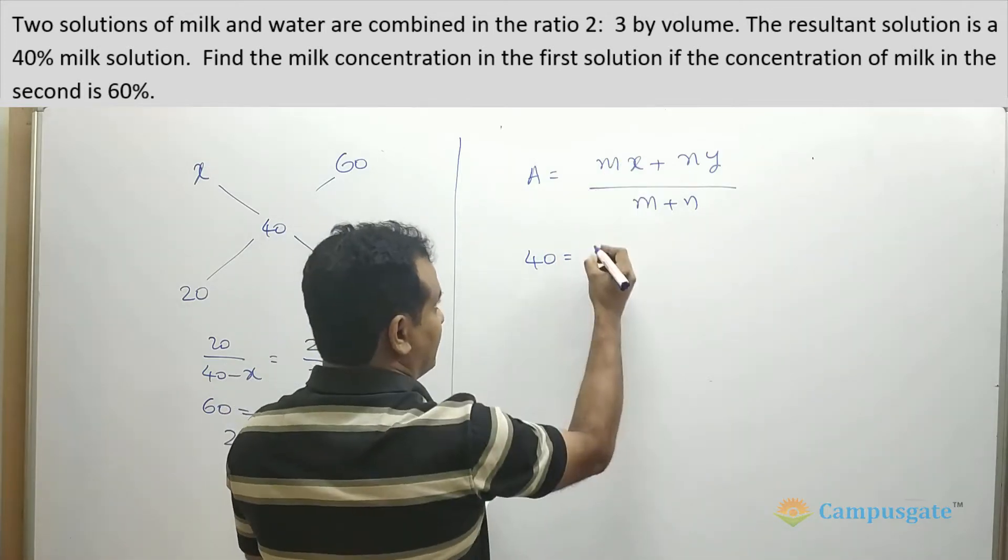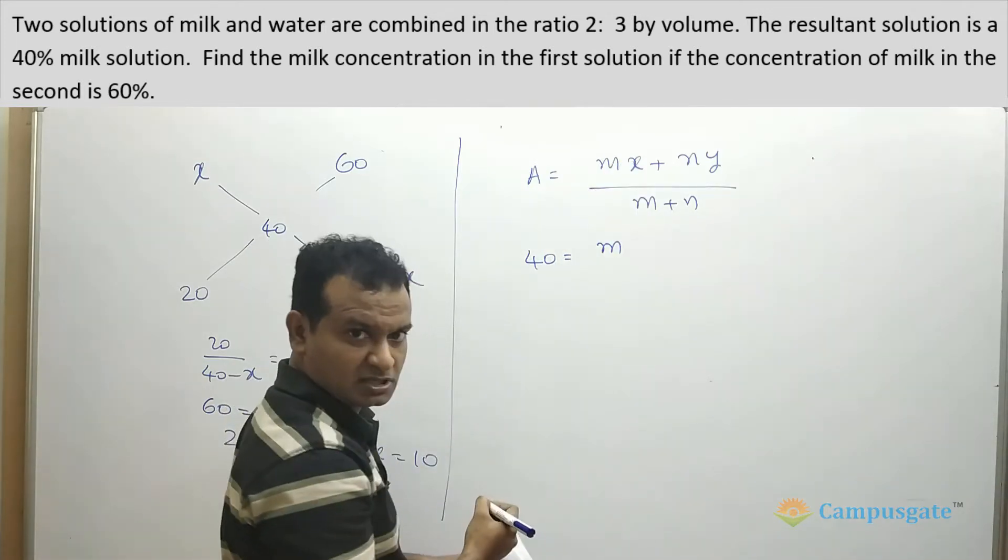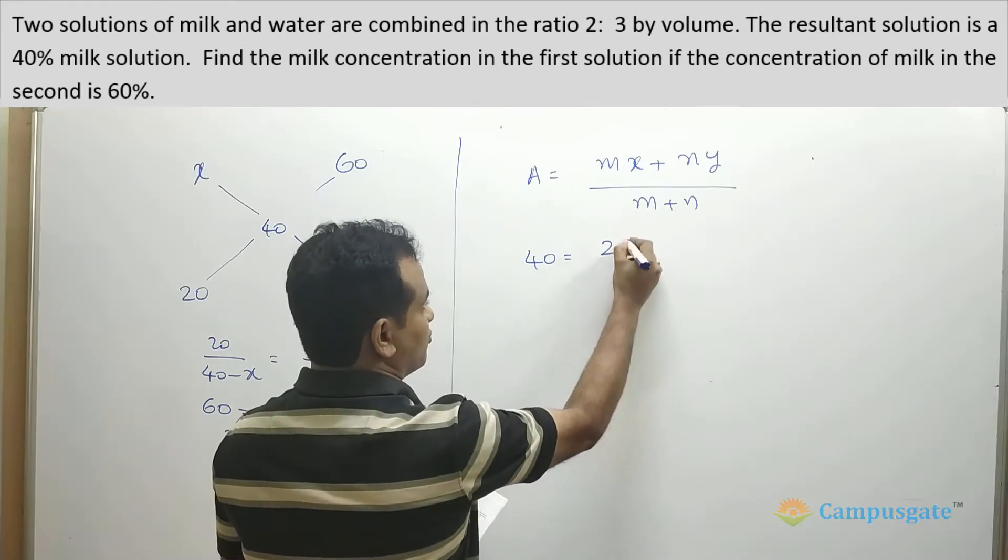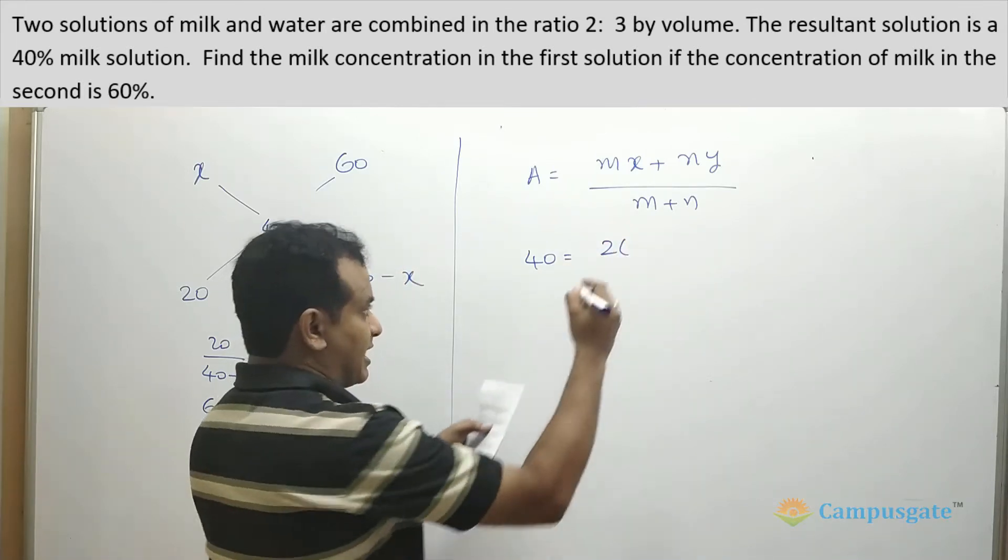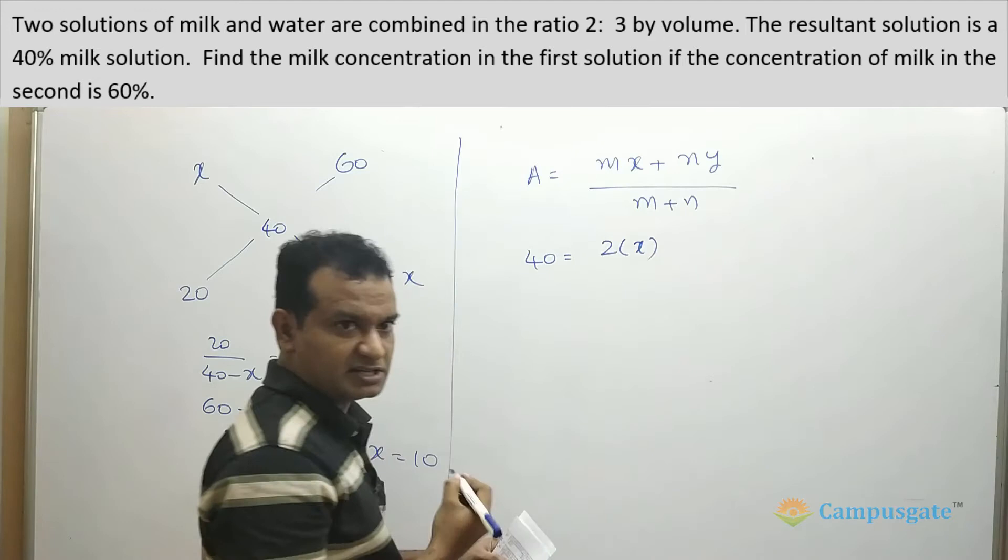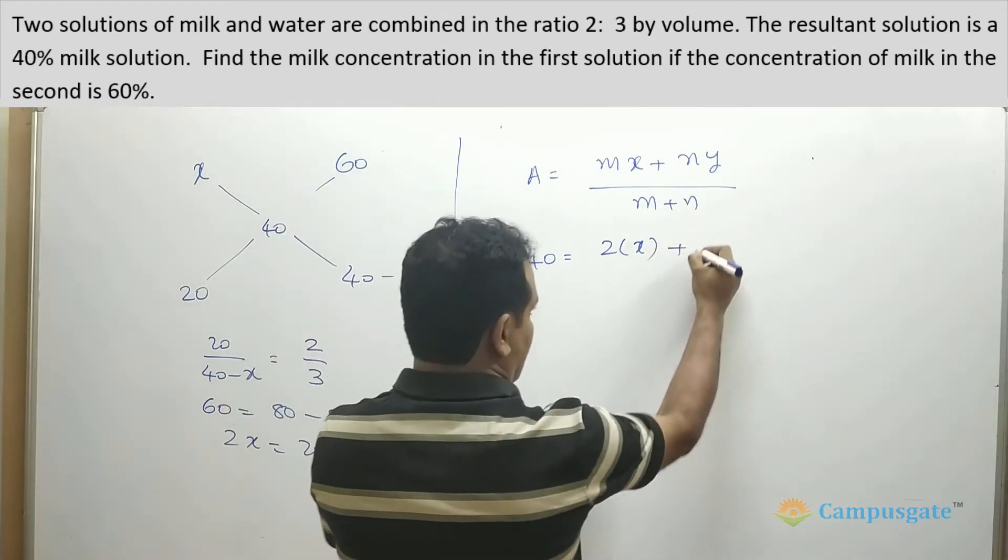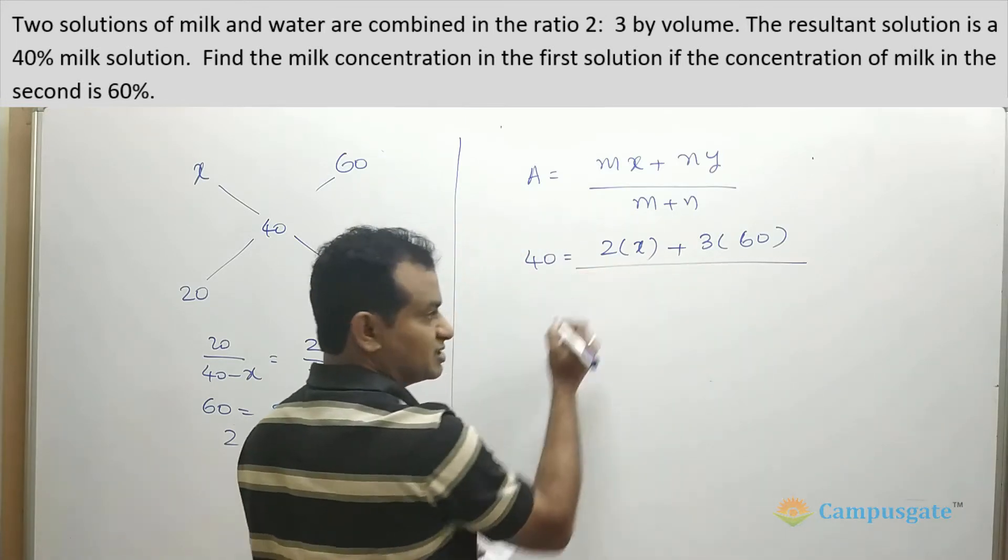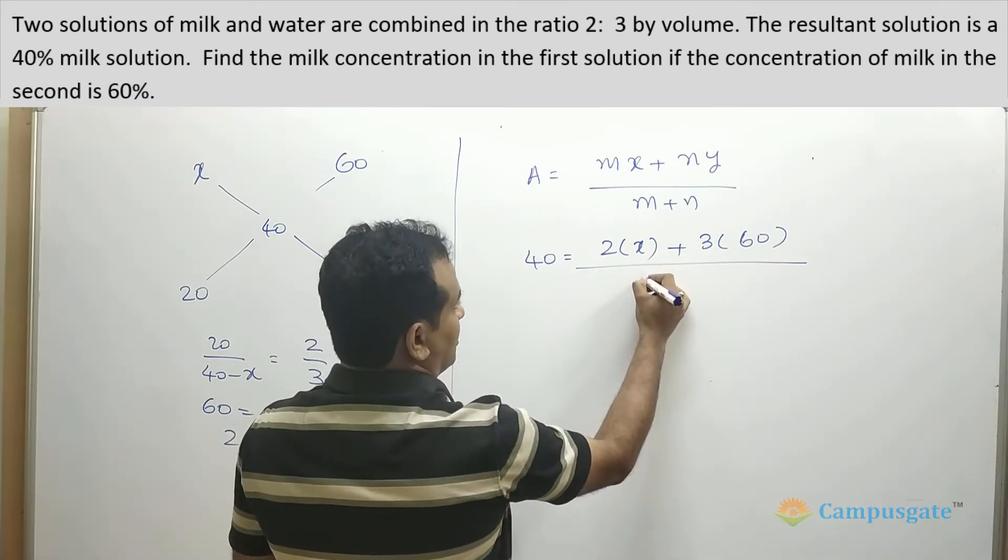So here it is given that the resultant solution is 40. The first quantity M we need to find out. No, no, the M was already given. So M is equal to 2, the first quantity we have taken as 2, and the concentration we need to find out, which is equal to x, and 3 into 60, the concentration of the second solution, divided by 2 plus 3.